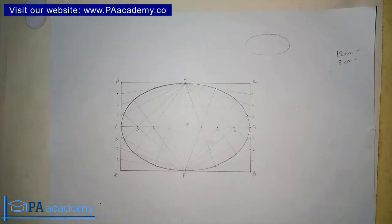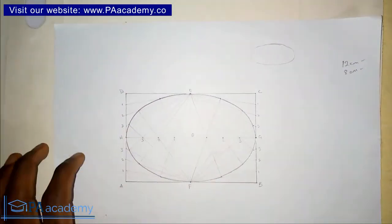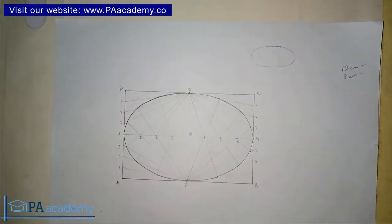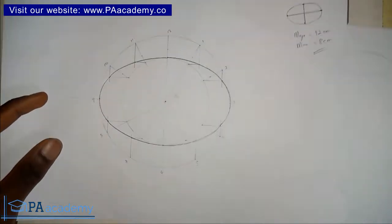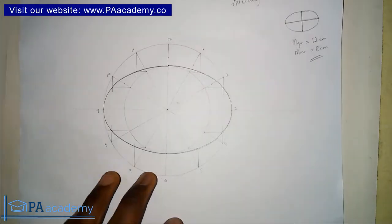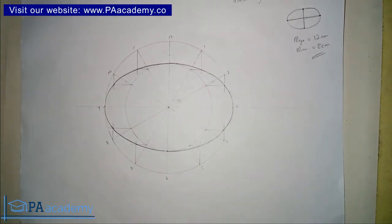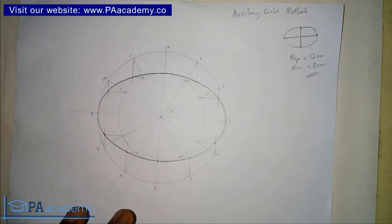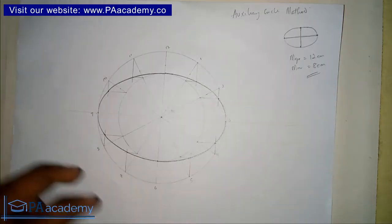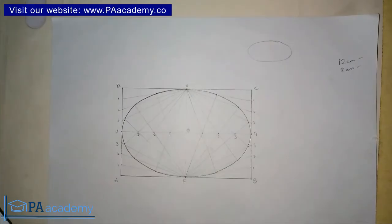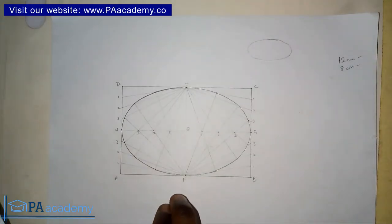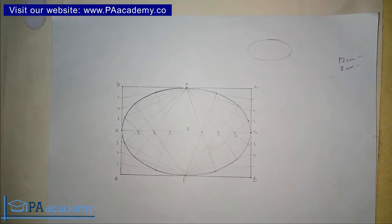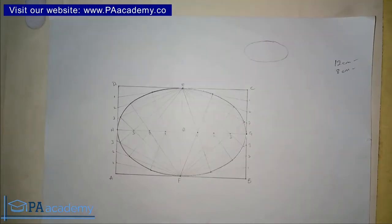I want to believe you already know how to draw an ellipse itself. This one here is drawn using the rectangular method, while this particular one is using the auxiliary circle method. If you don't know how to draw an ellipse, you can check the description of this video for the link to videos explaining both the auxiliary circle method and the rectangular method.